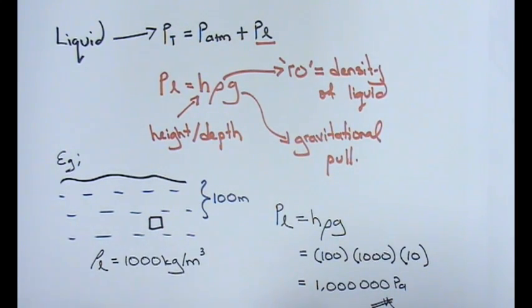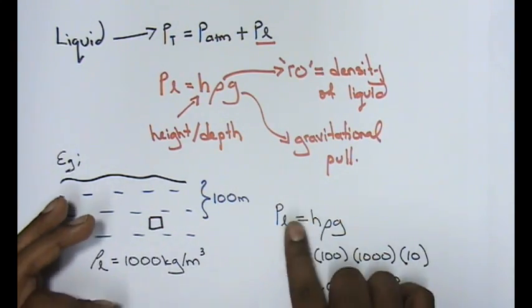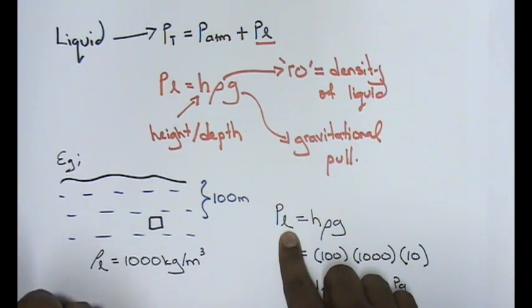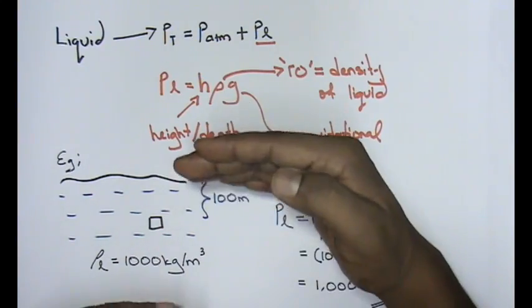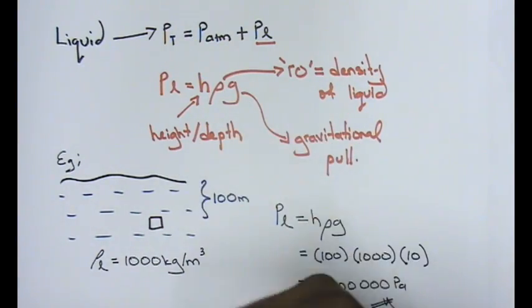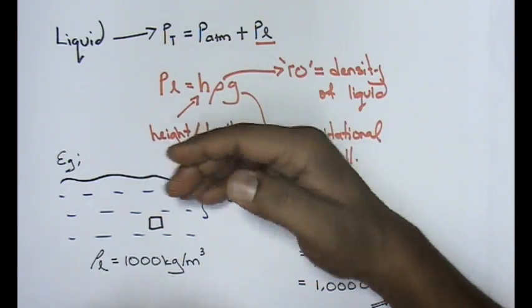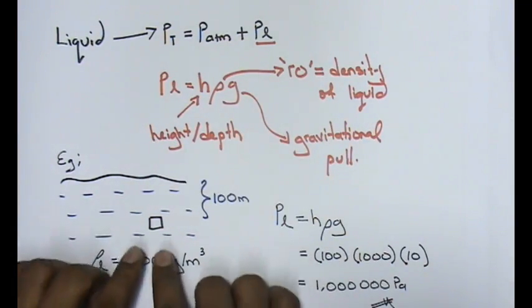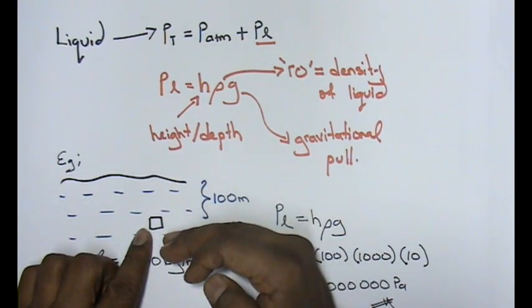You can clearly see it's that easy to calculate your liquid pressure. Don't forget the formula h·ρ·g: h is the height or the depth of an object or the container. Given to you an example, the depth of the object is 100 meters below the surface of water.